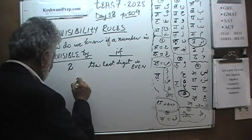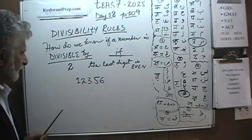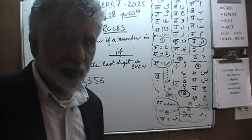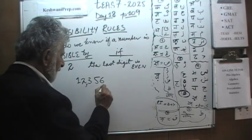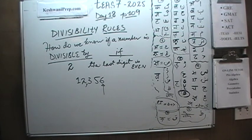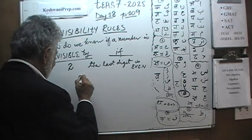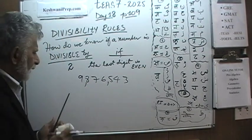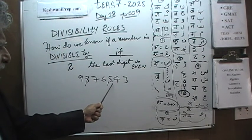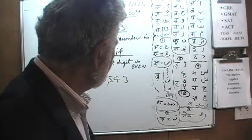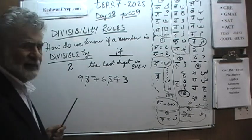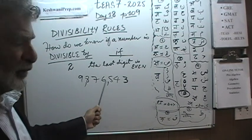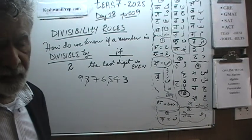For example, if somebody gives us 12,356 — is 12,356 divisible by two? The answer is yes, because the last digit is six and six is even. How about 9,876,543? Is that number divisible by two? The answer is no, because it ends in a three and three is an odd number. As long as the last digit is even, it does not matter what comes before it. The reason you only look at the last digit is because all higher place values (tens, hundreds, thousands, etc.) are already divisible by two since they are multiples of ten.